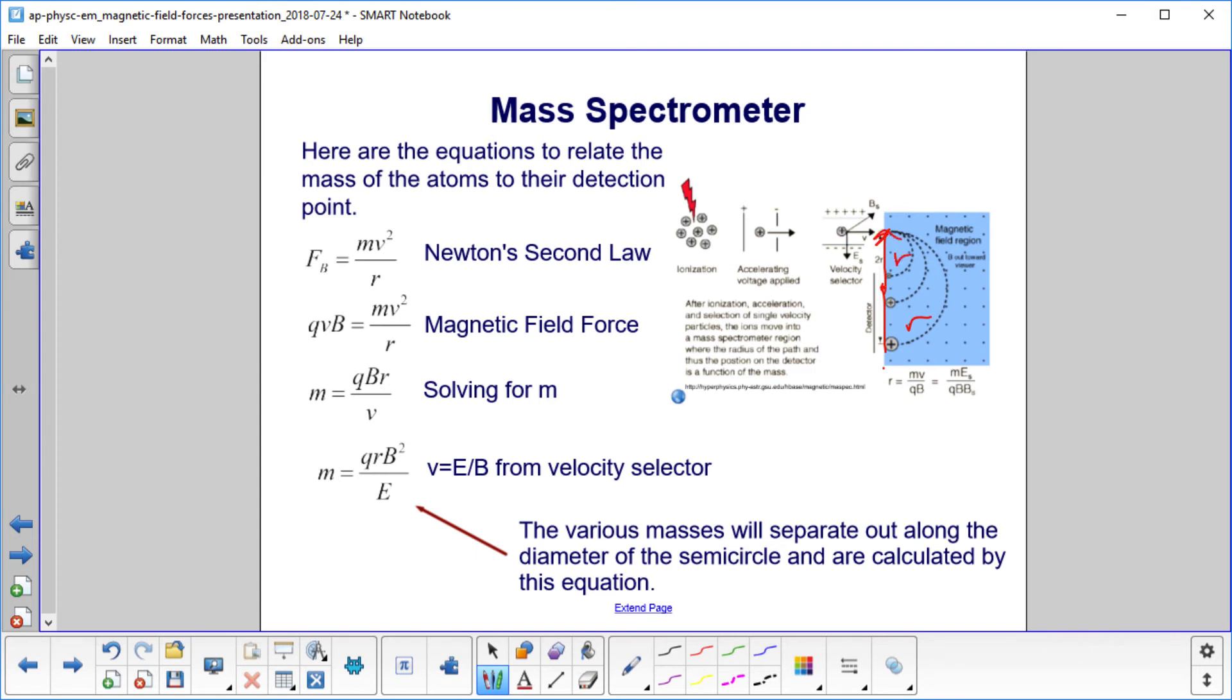But how far are they from where they started? Well, they're 2r. So when you measure this, you would cut that in half to use in the r equation. And then the detectors will tell you how many struck that point. So we can tell the quantity of atoms with that mass, and we can also tell their mass.